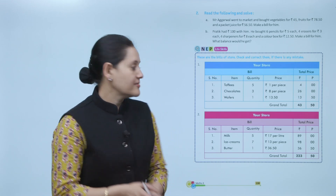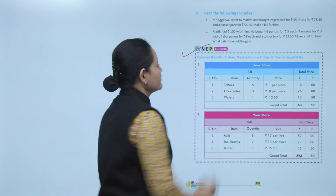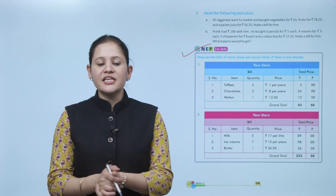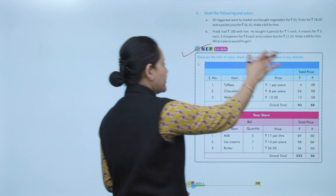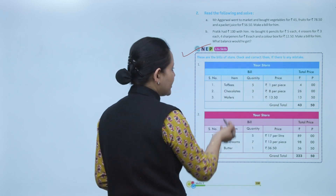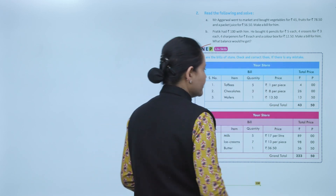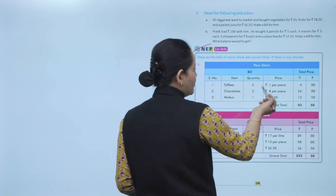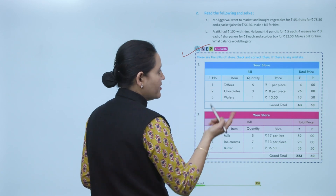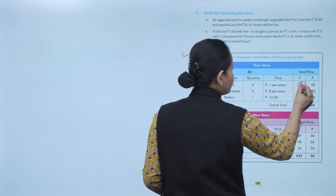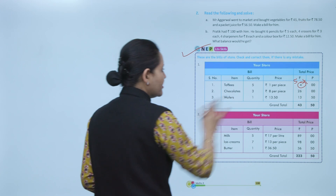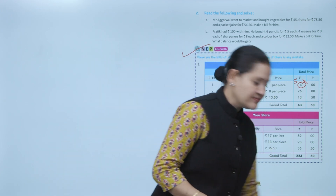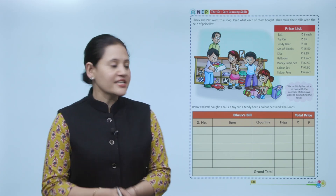Next is life skills. These are bills from a store — check and correct them if there is any mistake. For example, toffees: quantity 5, price 1 rupee each, so for 5 it should cost 5 rupees. If the bill shows something different, that is wrong. Like this, check whether the amount is right or not.